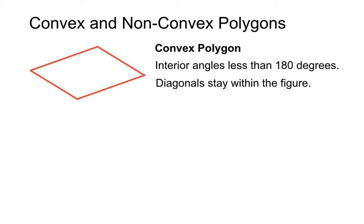And also, the other thing that makes it a convex polygon is that the diagonals, the joins between the corners, opposite corners, they stay within the figure the whole time. Let's have a look.